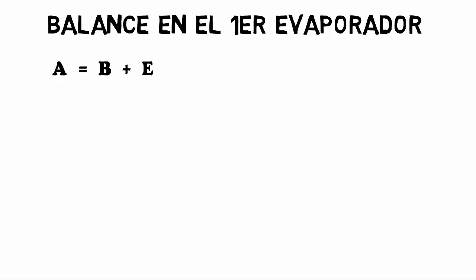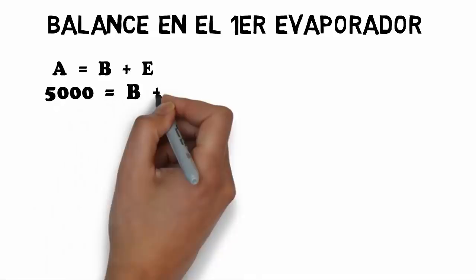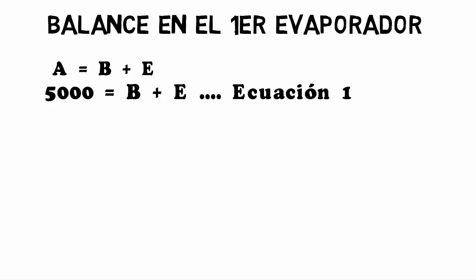As a first step, we perform a global balance on the first evaporator. This is given by the expression A equals B plus E. Substituting the value of A which is 5000, we have that 5000 equals B plus E. This is our first equation.